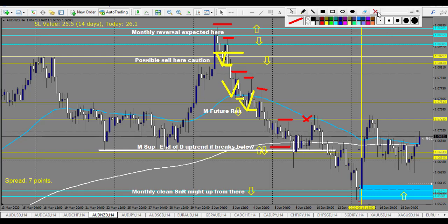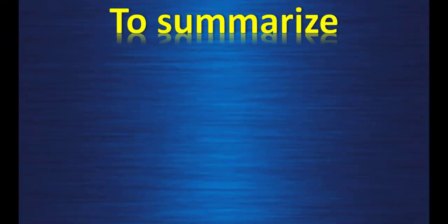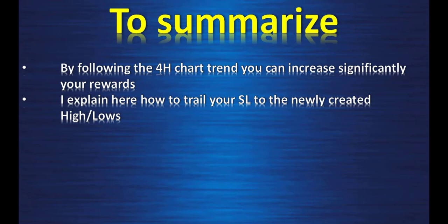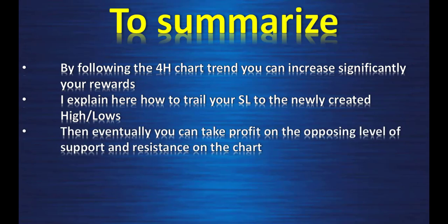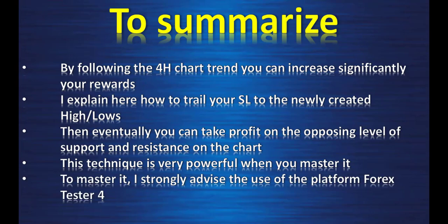That's the last example. How you trail your stop is very simple: as soon as price breaks a newly formed high or low, you move your stop loss to that newly formed high or low. To summarize: by following the four-hour chart trend you can increase your rewards significantly. Trail your stop loss to the newly created highs and lows, and eventually take profit on the opposing level of support and resistance on the chart.